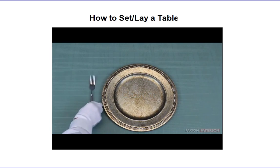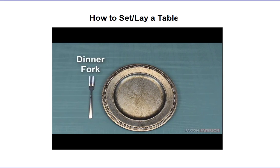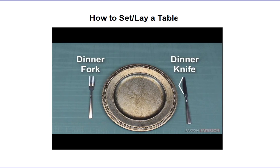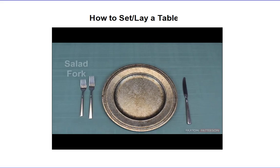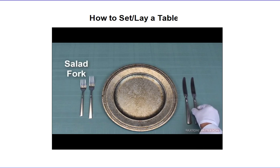Place a dinner fork on the left and a dinner knife on the right. Notice that the knife blade is turned toward the center — this is a formal tradition dating back to when dinner guests had very sharp knives, and it was polite to keep the knife blade turned away from guests. Add the salad fork outside of the dinner fork because you'll have salad before the main course, and if you have a salad knife, add that outside of the dinner knife.